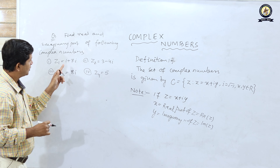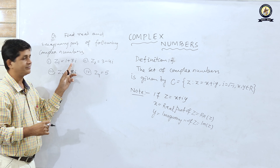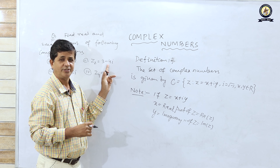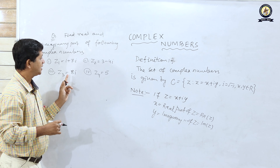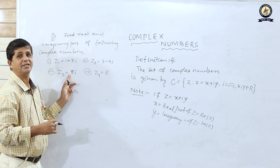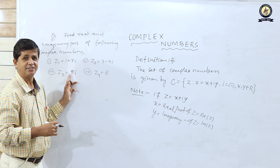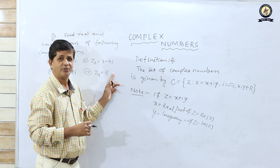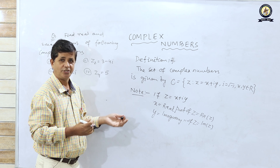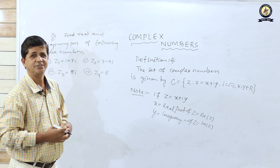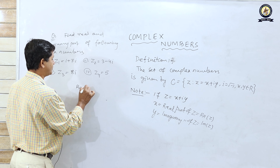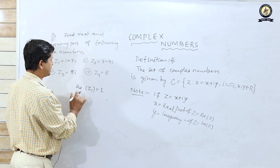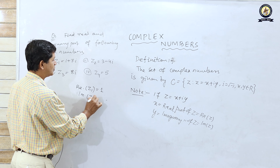The real part of z1 is 1 and the imaginary part of z1 is 7. The real part of z2 is 3 and the imaginary part of z2 is −4. For z3 = 8i, there is no real part, so we write it as 0 + 8i; real part is 0 and imaginary part is 8. Re(z1) = 1 and Im(z1) = 7.